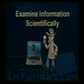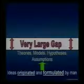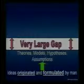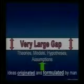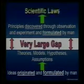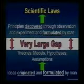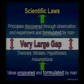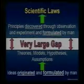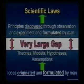So now let's examine this definition scientifically. In science we have theories, models, hypotheses, and assumptions. Where do they come from? We make them — we originate theories, hypotheses, and assumptions and formulate ideas. But above that level of science, there's a very large gap, because above all of those is something called scientific laws. We discover scientific laws; we don't create them. We can create hypotheses, models, and theories, but we do not create scientific laws. We discover them and formulate ideas.